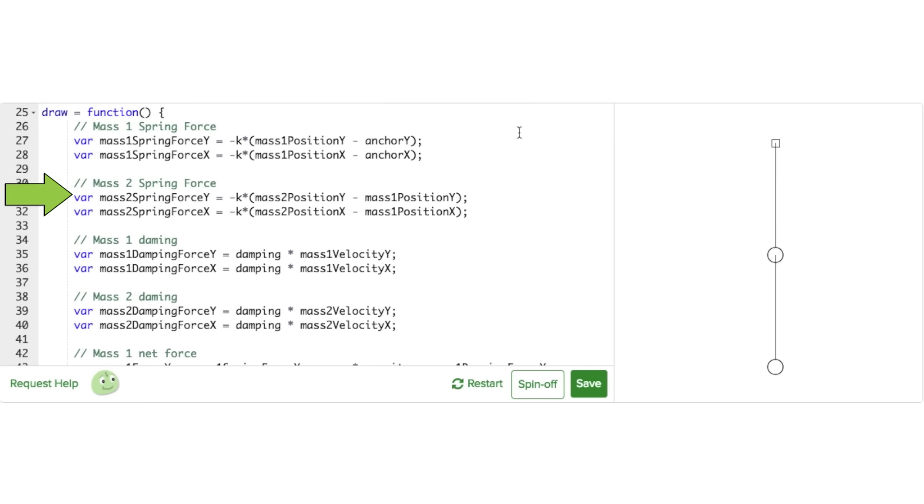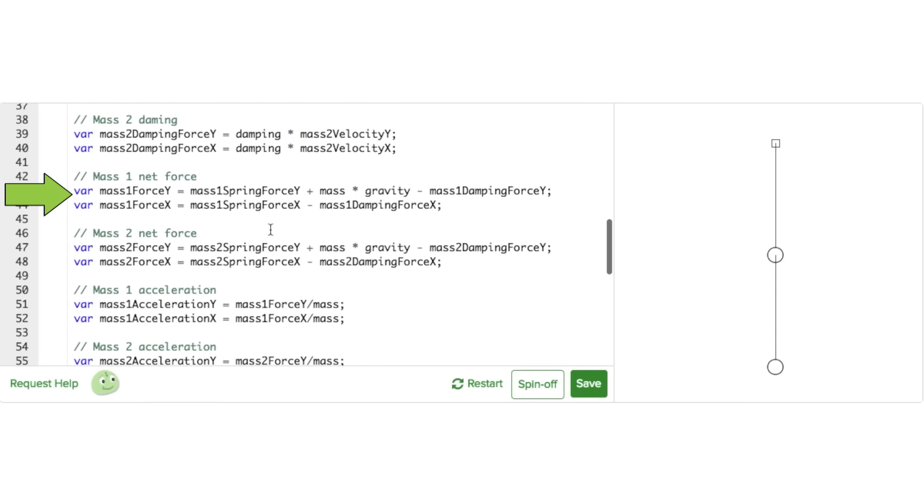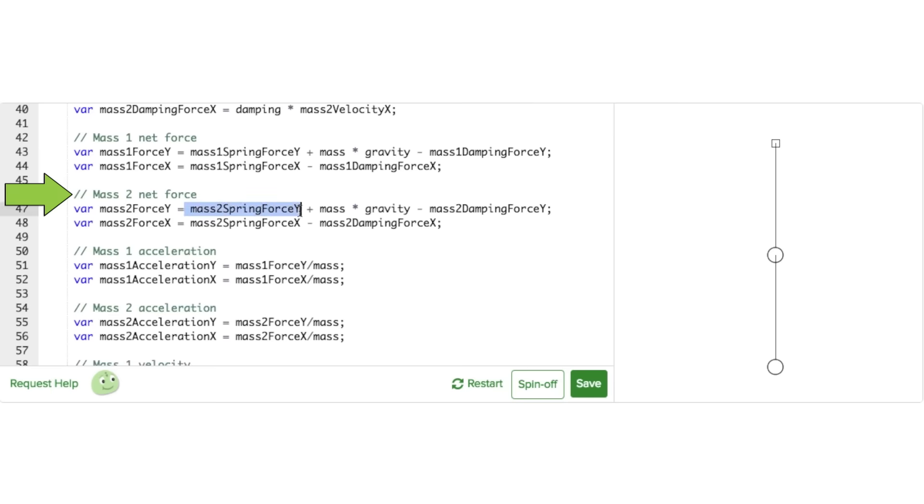For the mass 2 spring force calculations, we'll use mass 2 position minus mass 1 position as our displacement. And for the mass 2 net force calculations, we have mass 2 spring force minus mass 2 damping force.